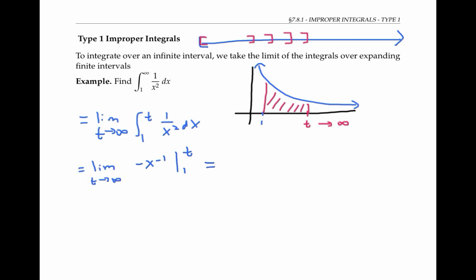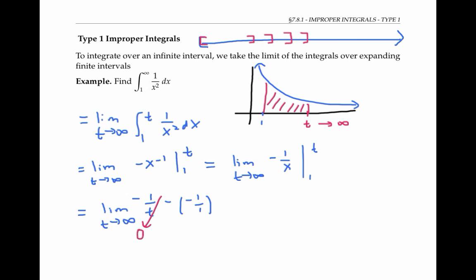Rewriting as negative one over x and evaluating on the bounds of integration: as t goes to infinity, one over t goes to zero. So the limit comes from this expression, which evaluates to one. If we think of the integral as representing area, this is a little surprising — even though we're taking the area of an infinitely long region, the area still evaluates to a finite number of one.